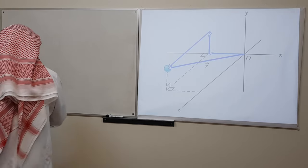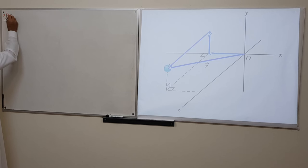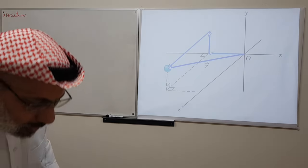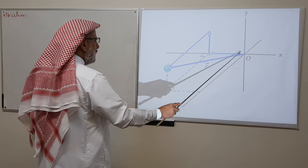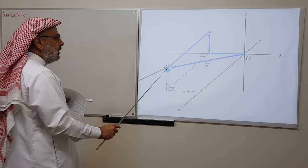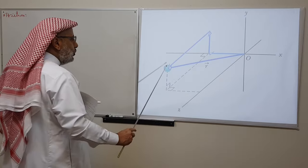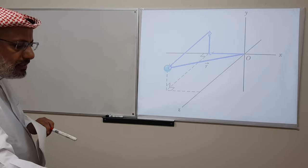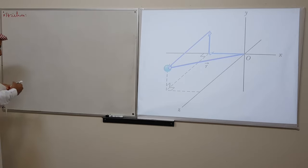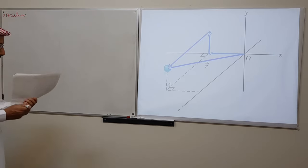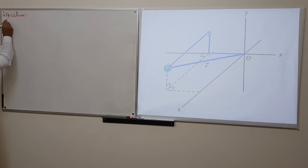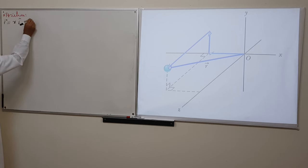Let's start with the position. The position of a particle in two and three dimensional motion is represented by the vector r — instead of x, now we talk about r — and it is a vector that goes from the origin of the coordinates to the point where the particle is. It has x, y, and z components, and those components are the coordinates of the particle. We write the position vector r as equal to x·i + y·j + z·k.